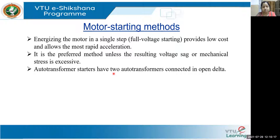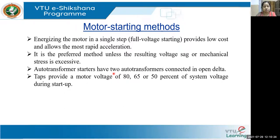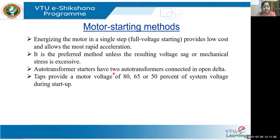Autotransformer starters are also available. They have two autotransformers connected in open delta — they have to be open because autotransformers are single-winding. Tap provides motor voltages at 80%, 65%, or 50% of system voltage during startup so that you can gradually increase the voltage. Line current and starting torque usually vary with the square of the voltage applied to the motor.